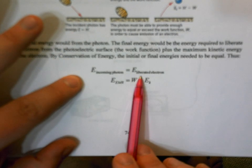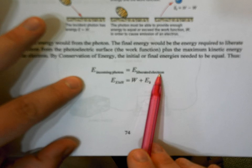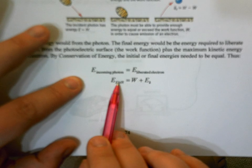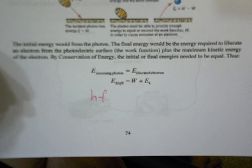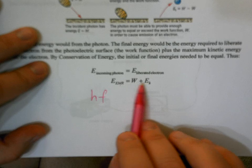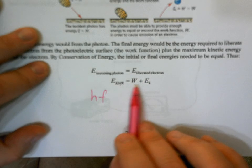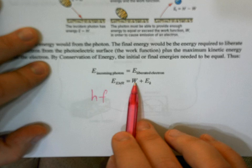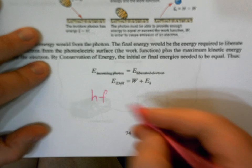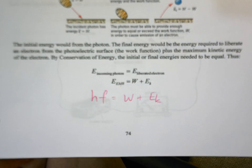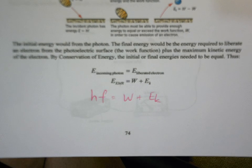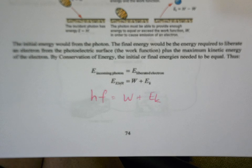Through conservation of energy, the energy of the incoming photon equals the work function plus the kinetic energy of the liberated electron. The incoming energy is hf or hc over lambda. We need the work function because it's the minimum amount required to liberate the electron, and whatever is left goes into the kinetic energy. This is the equation for the photoelectric effect. On exams and on the diploma, this is not provided — you have to derive it from conservation of energy.